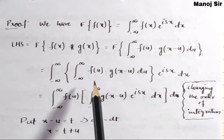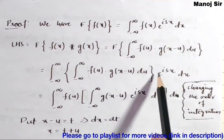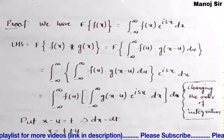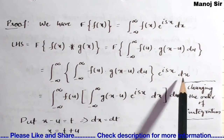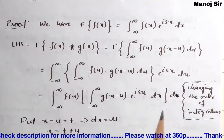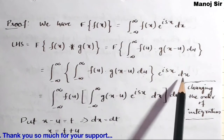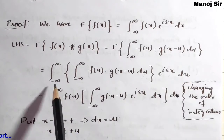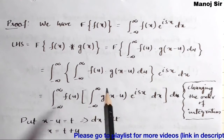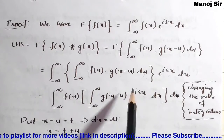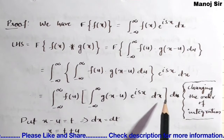So we have: integration from minus infinity to plus infinity of the quantity — integration from minus infinity to plus infinity of f(u) into g(x minus u) du — into e to the power isx, dx. Now we will change the order of integration. The limit for u is minus infinity to plus infinity and the limit for x is also minus infinity to plus infinity, so on changing order the limits do not change.